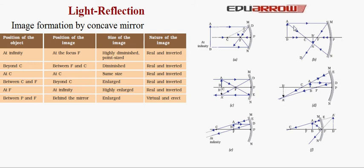When the position of object is at center of curvature, the image is also formed at center of curvature. The size of the image is same as the size of the object, and the nature of the image is real and inverted. The object AB is placed at center of curvature, and light rays after getting reflected meet at center of curvature.